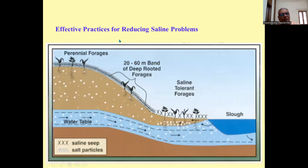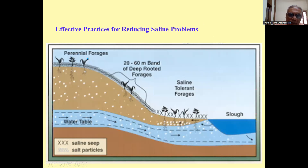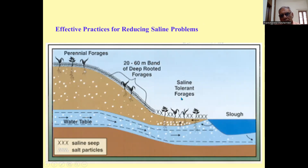Effective practices for reducing saline problems include growing perennial forage crops that are salt-resistant, in 20 to 60 meter bands of deep-rooted forages. You can grow deep-rooted forage crops like lucerne. Also, saline-tolerant forage crops like Bermuda grass and Karnal grass can be grown.